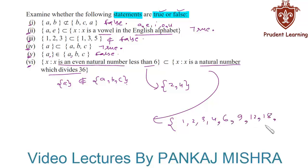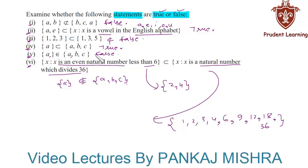The natural numbers that divide 36 are 1, 2, 3, 4, 6, 9, 12, 18, and 36. We can see that the elements of the first set, 2 and 4, are also present in the second set. Hence the first set is a subset of the second set, so this statement is true. This completes our solution.